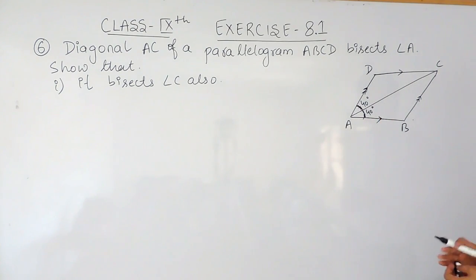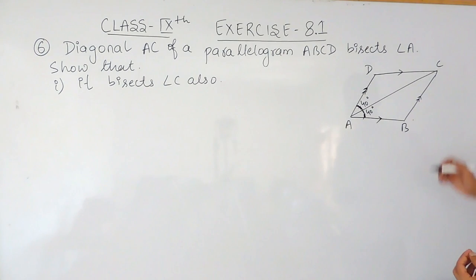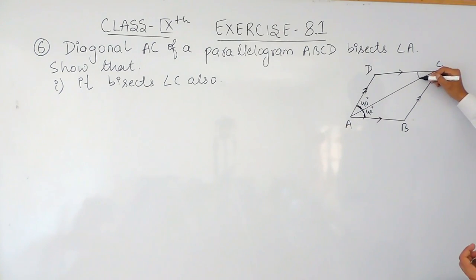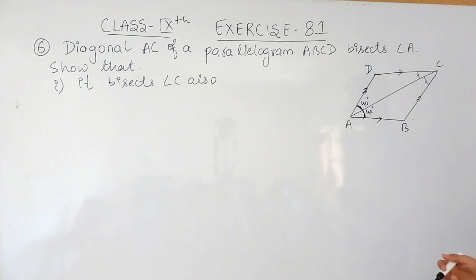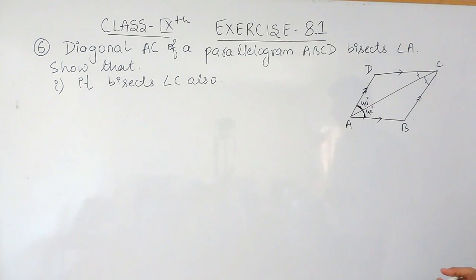You have to prove that the diagonal also bisects angle C — meaning you have to prove that this angle and this angle at C are also equal. So how do we do that?